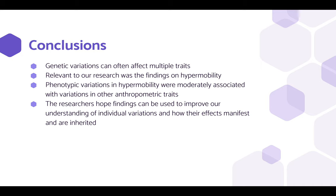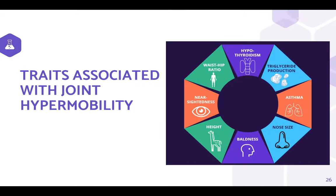So what are the conclusions? Genetic variation can often affect multiple traits. Relevant to our research were the findings on hypermobility: phenotypic variations in hypermobility were moderately associated with variations in other anthropometric traits. The researchers hope findings can be used to improve our understanding of individual variations and how their effects manifest and are inherited. Here are some traits that are associated with joint hypermobility. The data for this chart was pulled from the GWAS we looked at, and it shows traits that appear to be under the same genetic influence as joint hypermobility, which is one of the most common symptoms of EDS. Traits like asthma align with the pneumothorax symptoms of vascular EDS. Triglyceride production, which is responsible for major energy sources in the body, and hypothyroidism often cause fatigue, something which is common among all types of EDS.